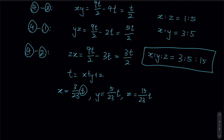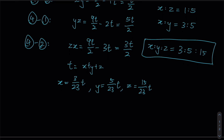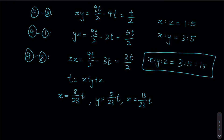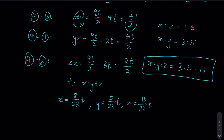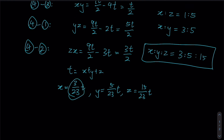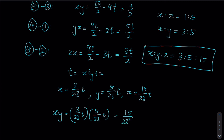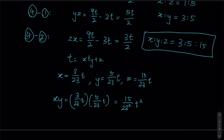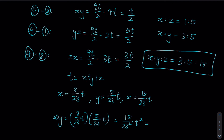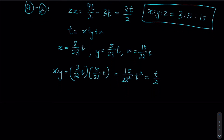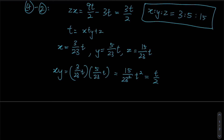What remains is to find the numerical value of t. We know that xy equals t over 2, and x and y can be expressed in terms of t. So xy equals (3 over 23 times t) multiplied by (5 over 23 times t), which equals 15 over 23 squared times t squared. This must also equal t over 2.